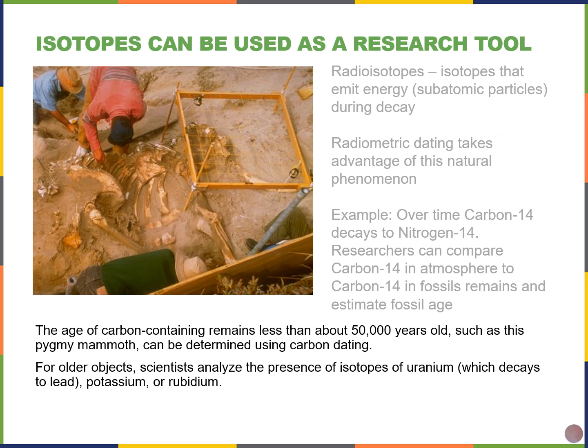Carbon-14 is really only accurate for remains that are 50,000 years old or less. If something is much older, we use different types of isotopes such as uranium, potassium, or rubidium. Uranium has a half-life of 700 million years. Potassium has a half-life of 1.25 billion years. And rubidium has a half-life of almost 49 billion years.